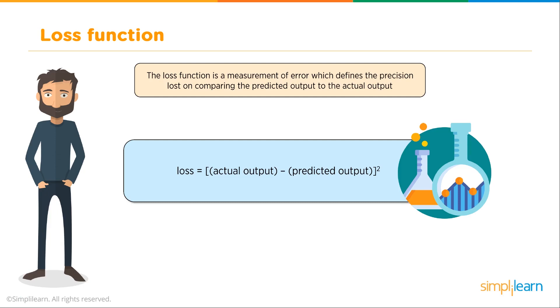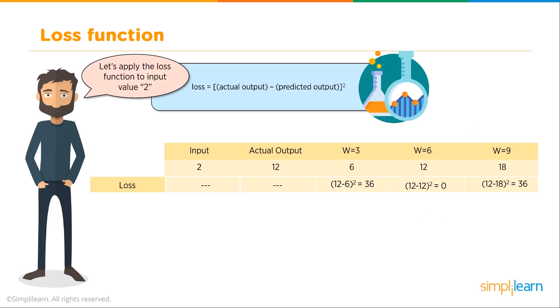With that we're going to have a loss function. The loss function is a measure of error which defines the precision lost by comparing the predicted output to the actual output. It's simply loss equals actual output minus predicted output and then we square the whole thing. Let's apply the loss function to the input value 2. Loss equals actual output minus predicted output, squared.